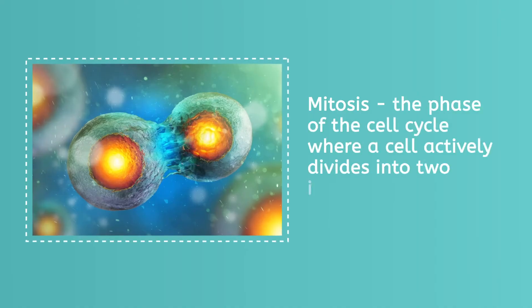As you might recall from a previous lesson, mitosis is the phase of the cell cycle where a cell actively divides into two identical cells. The key word here is identical. When making more of our own cells, we want them all to have the same DNA so they can all work together efficiently.